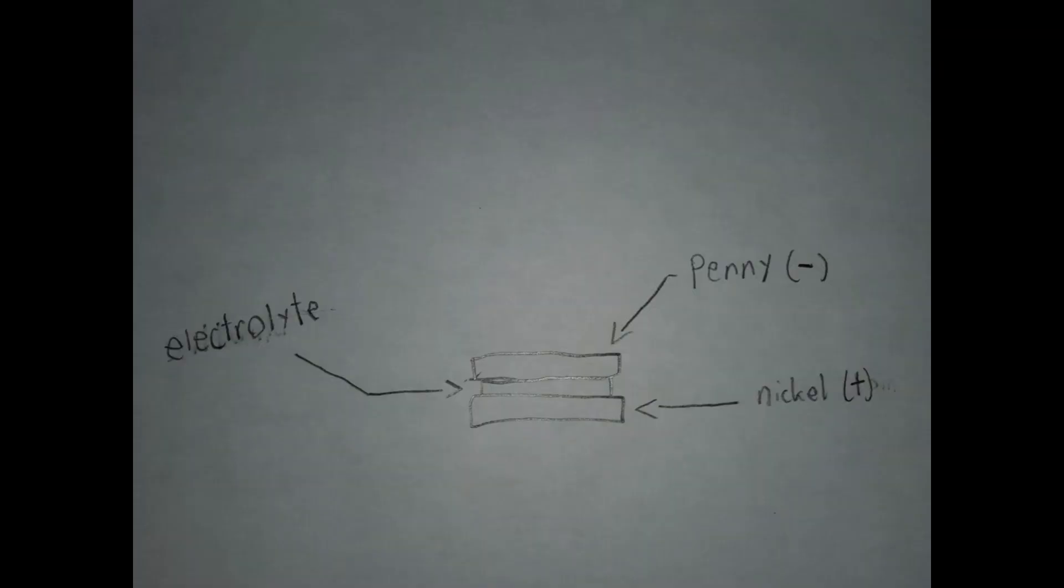Each cell worked by sandwiching a piece of saltwater-soaked cardboard or paper between two different kinds of metals. The saltwater electrolyte between two different kinds of metals starts a chemical reaction that makes electricity.